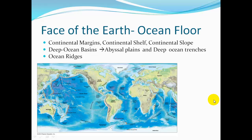The ocean floor on the face of the Earth includes the continental margins — the continental shelf and continental slope. Deep ocean basins include abyssal plains and deep ocean trenches. And the ocean ridges form the largest linear feature on the face of the Earth, as seen by these white ocean ridges in the ocean here.